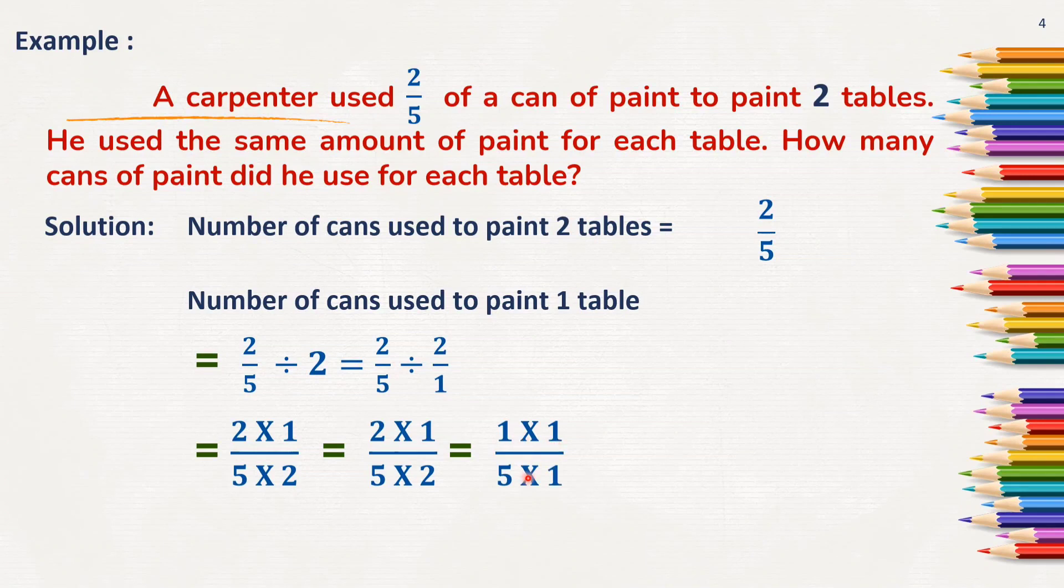Here again, 1 into 1, 5 into 1. Why did I write here 1 into 1 means here 2 and 2 both are divisible by 2 itself. Yes, so 2 one time is 2 and again 2 one time is 2.